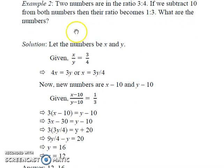Let the numbers be x and y. Since their ratio is 3 is to 4 so we can write x upon y equals 3 upon 4. Therefore 4x equals 3y or we get an expression for x: x equals 3y by 4.